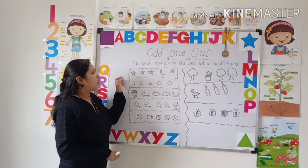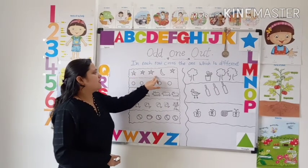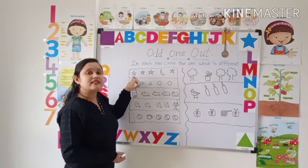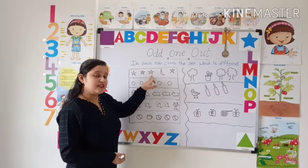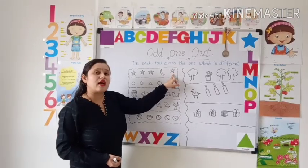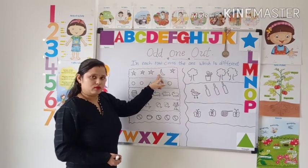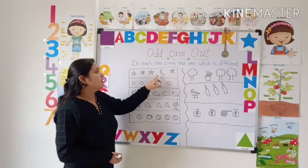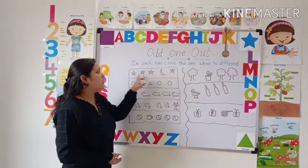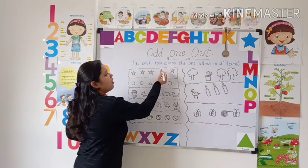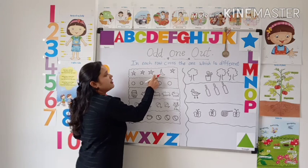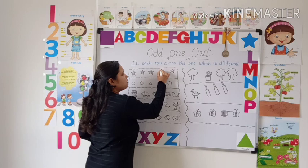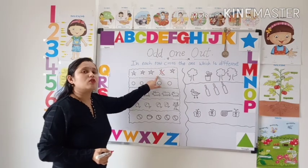Let's start. Now you can see here some stars. This is star, this is star, this is star, this is also star, but this is moon. So it is different from others. This one is different from others. It is called odd one. So you have to cross the odd one.